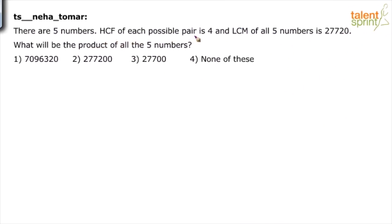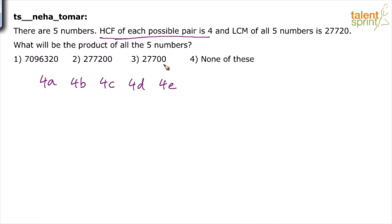You have to pay attention to this point and choose the numbers smartly. HCF of each pair is 4 — what does this mean? It means every number is a multiple of 4. HCF means highest common factor. The highest common factor in each possible pair is 4, so every number has 4 as a factor. Only then can the HCF be 4.